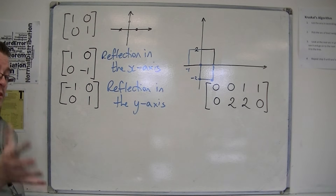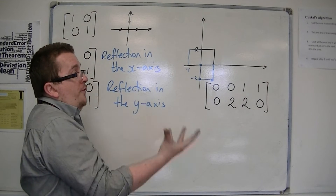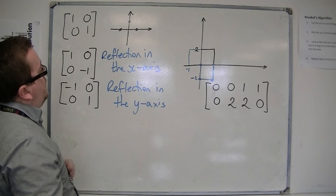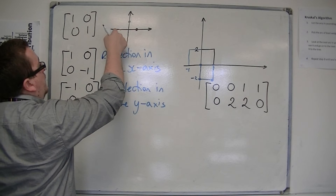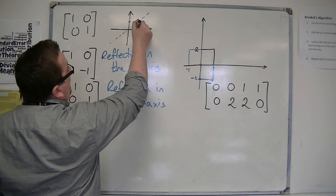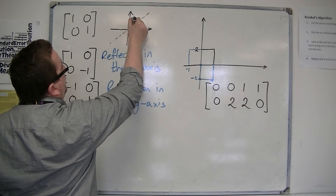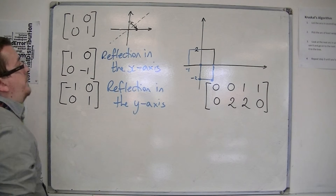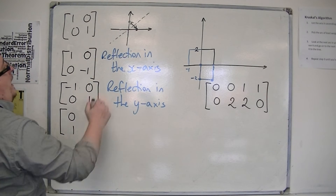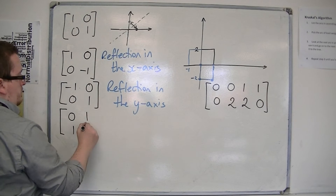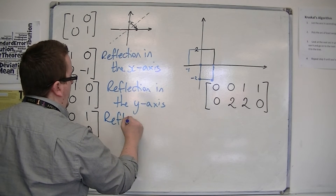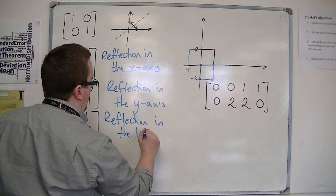Now, we have a reflection in the line y equals x. If I do y equals x, that is this line, and using that as a mirror line, that would mean that the (1,0) and the (0,1) would switch places. So (1,0) would become (0,1), and (0,1) would become (1,0). And so this is the matrix I'm looking for — that's a reflection in the line y equals x.